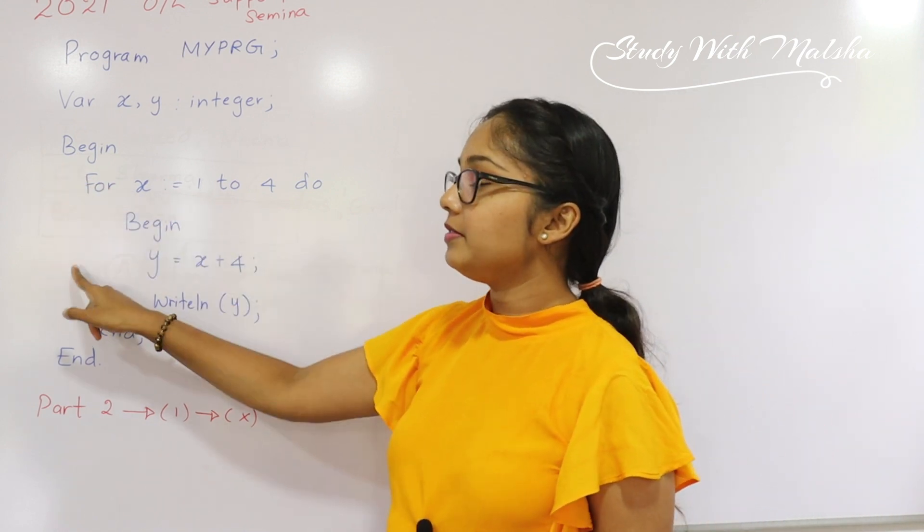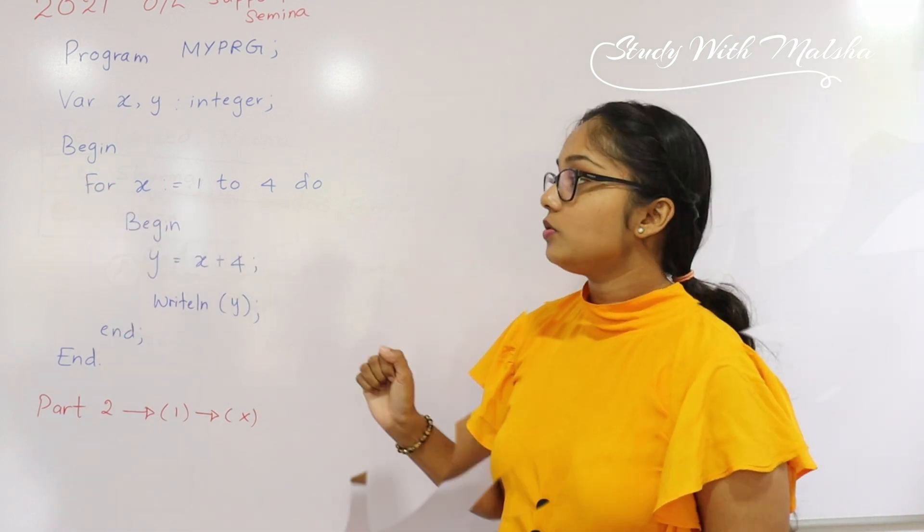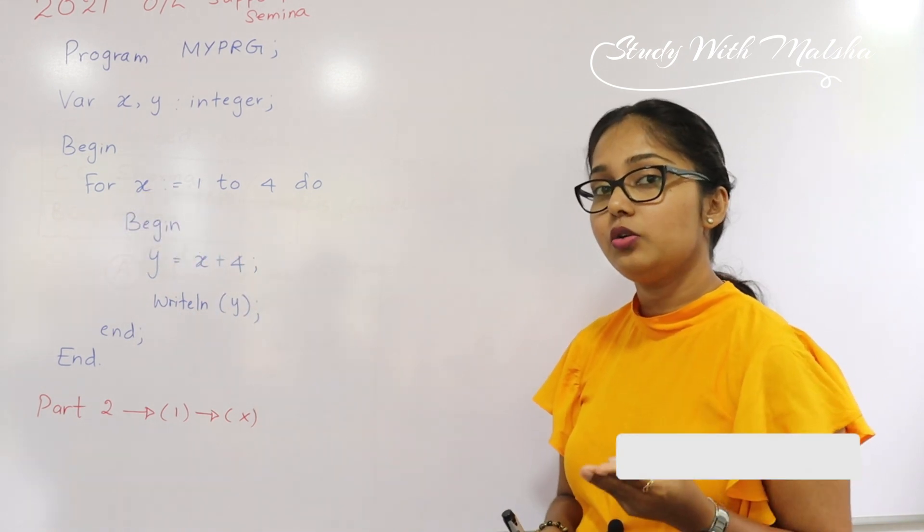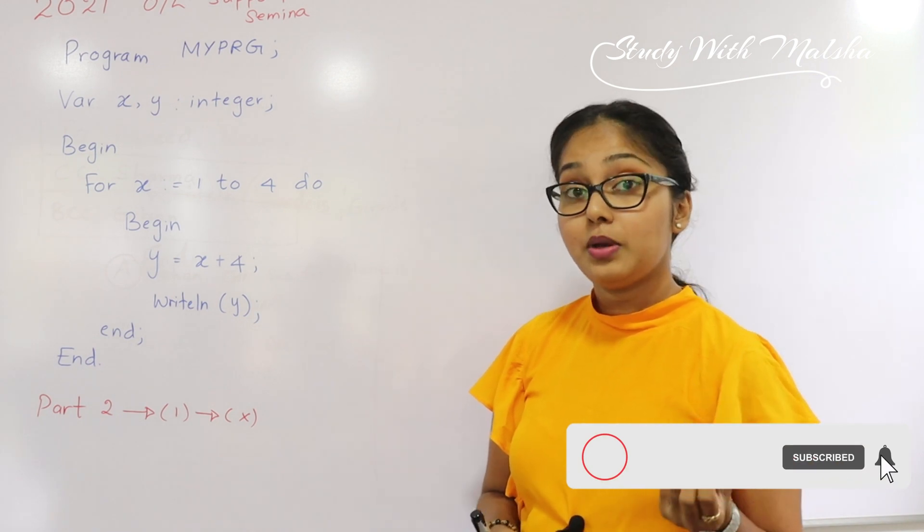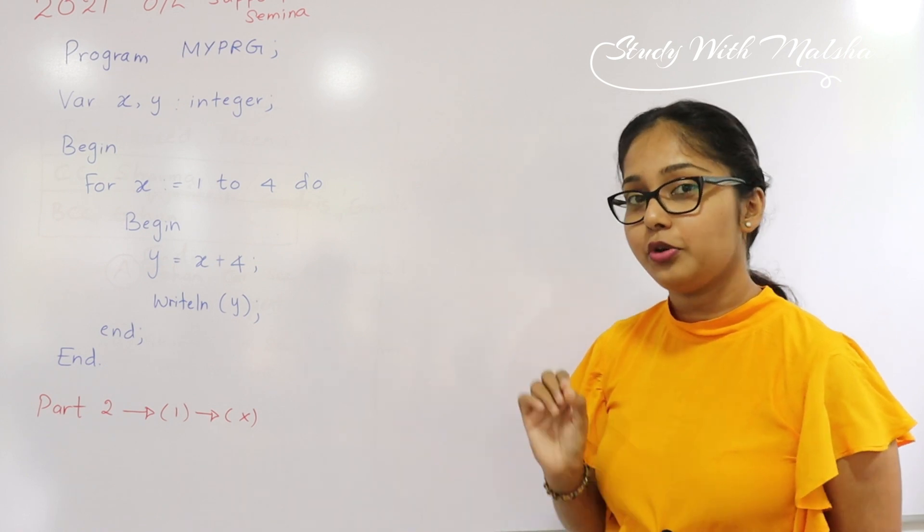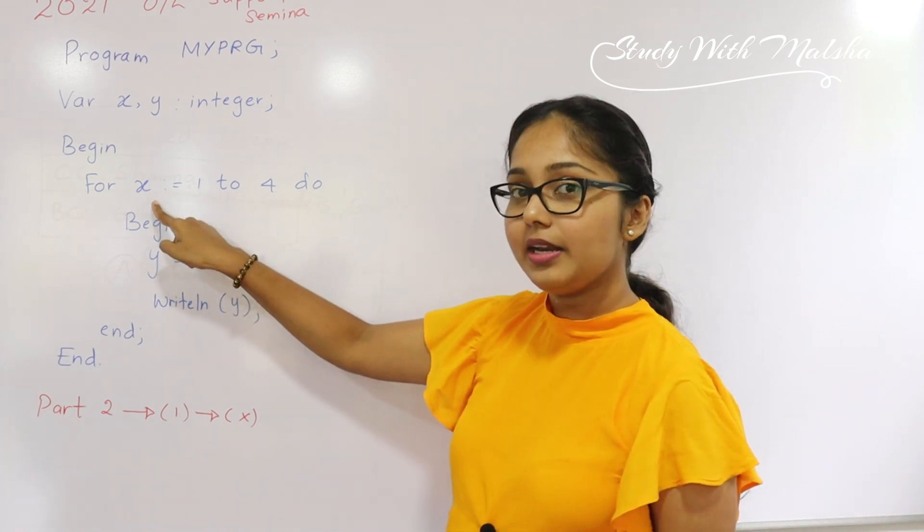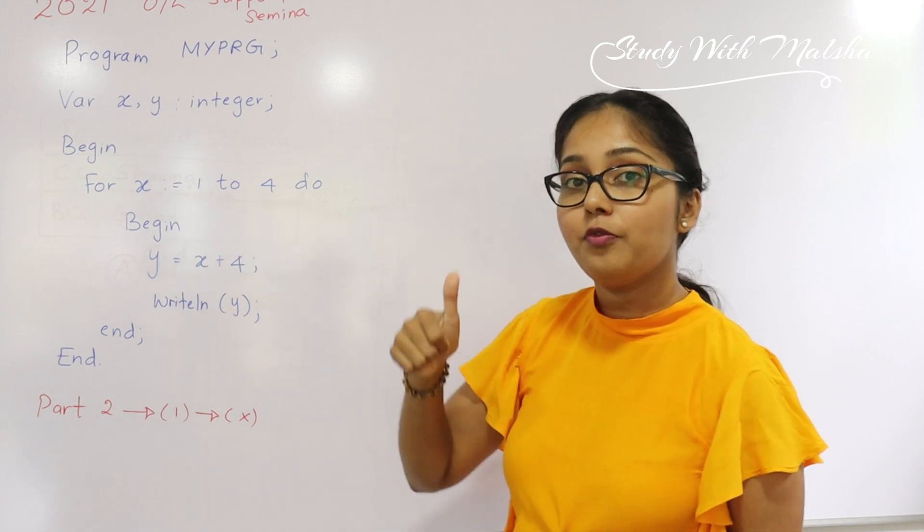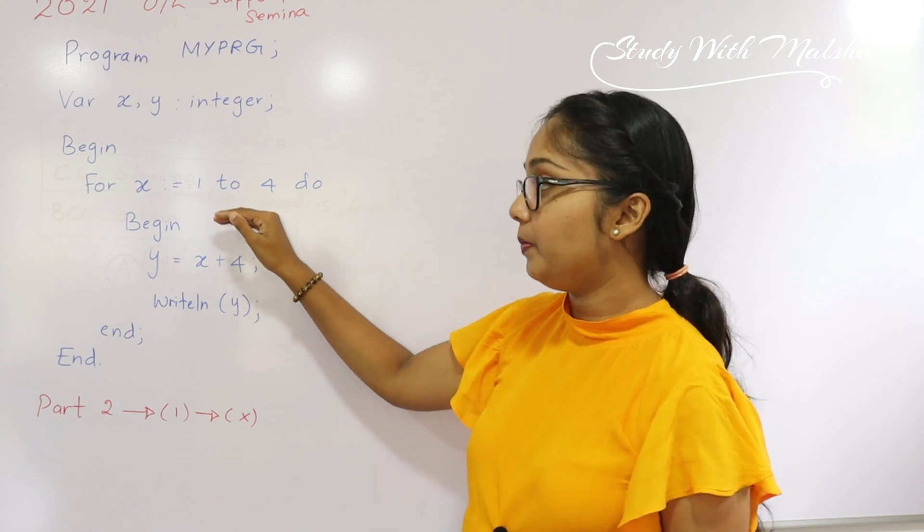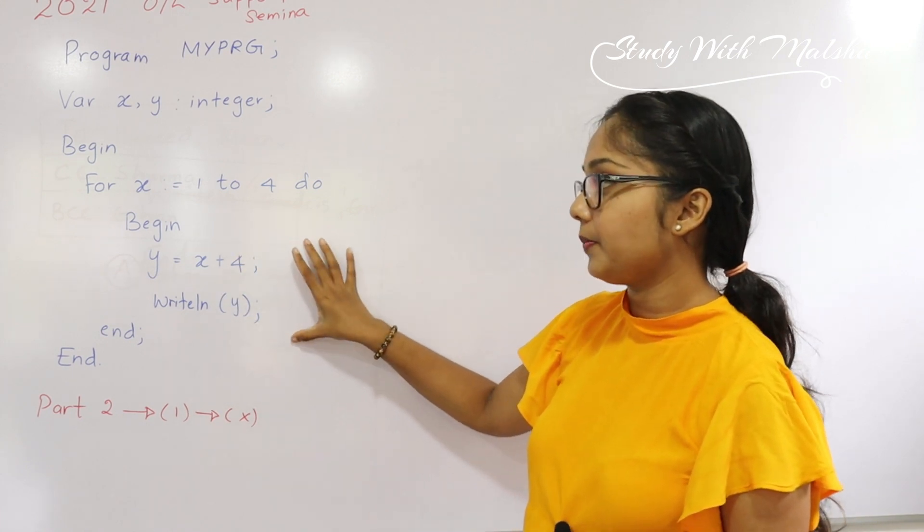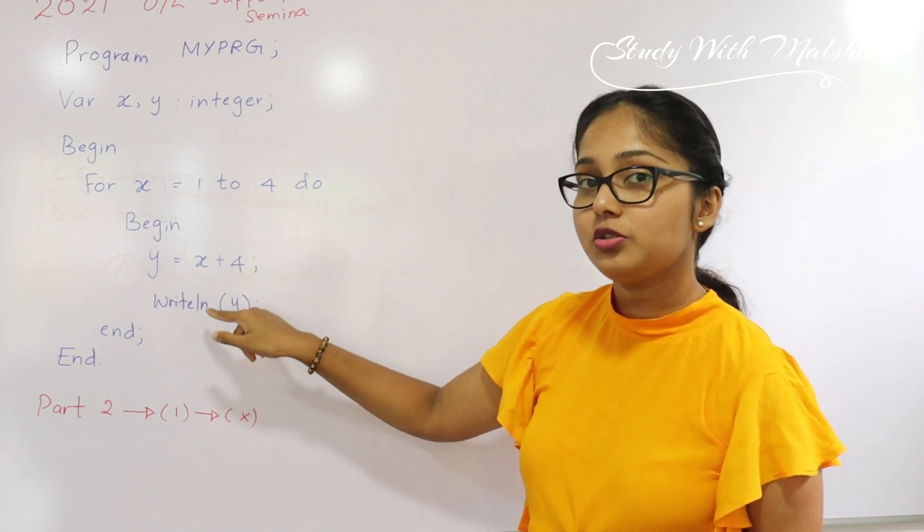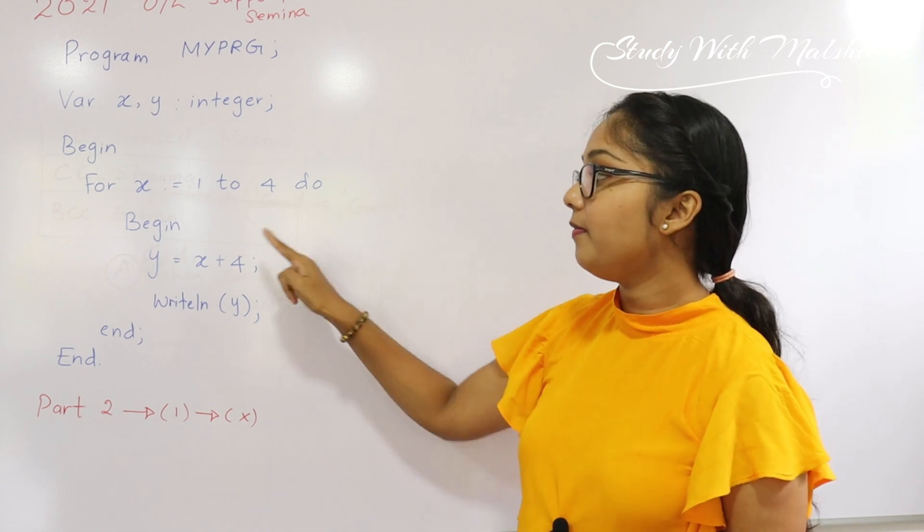From here only they have started the code. Here they have given you a for-do loop. In Pascal we have three main loops in repetition: first one is for-do loop, second one is while-do and the third one is repeat until. The easiest loop is the for-do one. The x variable is going to repeat from one to four, that means four times. Here once we go to the next code you can see they have opened a sub begin. This is a single block. Here they have given you y equals x plus four.